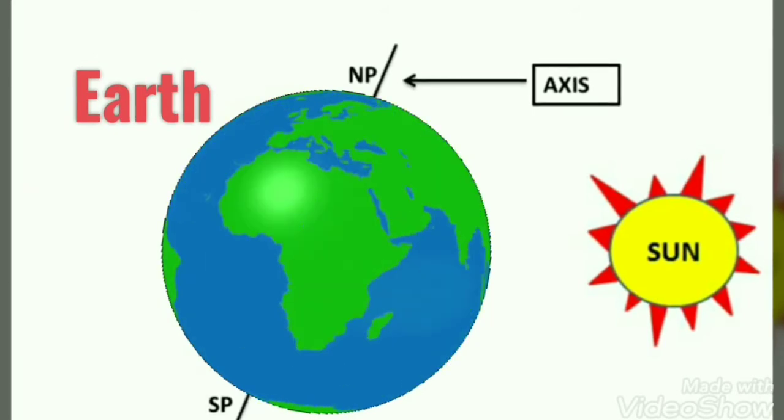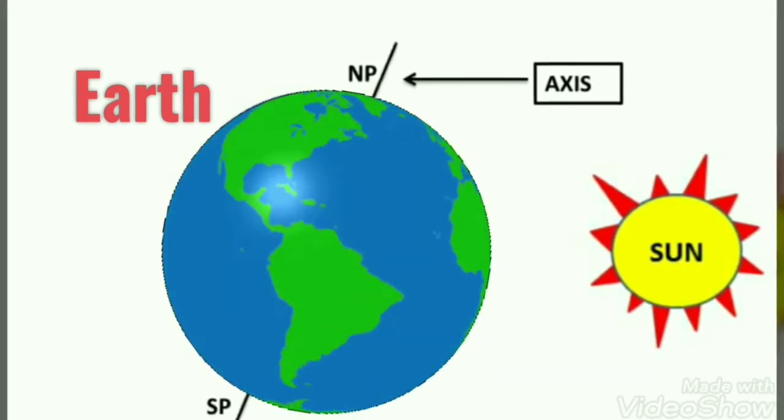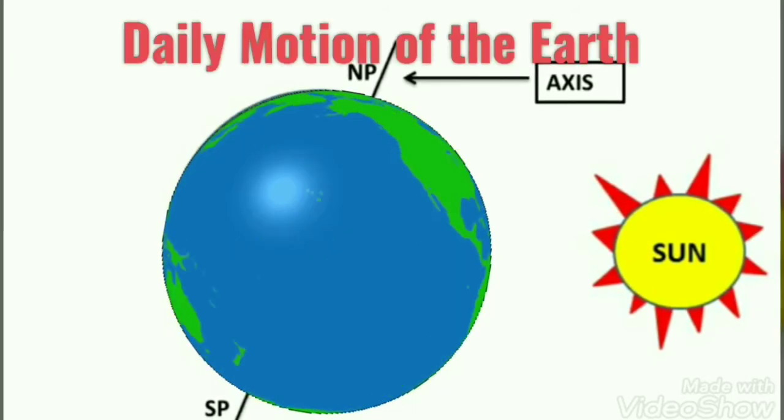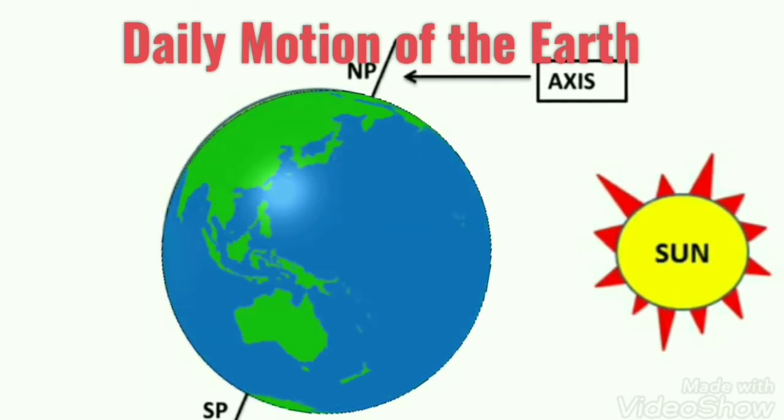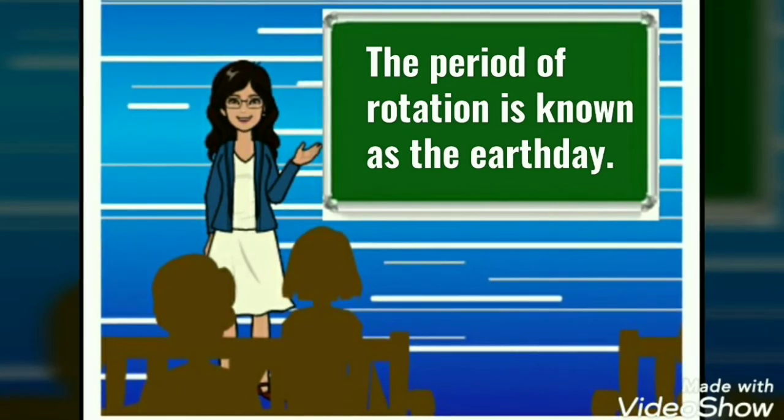The earth takes 24 hours or one day to complete one rotation on its axis. Thus, rotation is also called the daily motion of the earth and the period of rotation is known as the earth day.